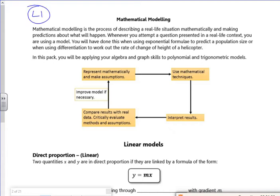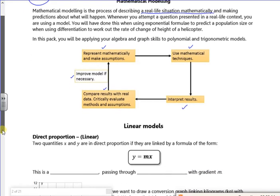So it says here it's the process of describing a real life situation mathematically. So it says whenever you attempt a question presented in real life, you're using a model. We've done this with the exponentials when we've predicted the population size and the rates of change. So what we're doing then - we're going to represent mathematically and we're going to make assumptions. We do that when we do the mechanics stuff. We're going to try and use some mathsy techniques. We're going to see what's going on and then we're going to think, okay, does it match what's actually going on? And then we're going to improve it. Now that cycle just continues and continues until it looks really, really amazing.